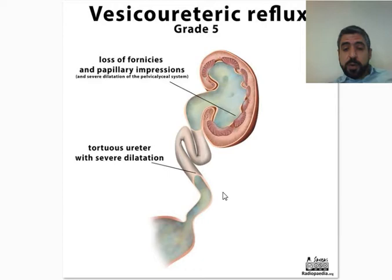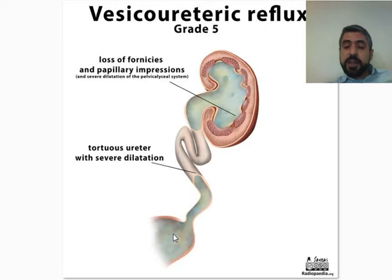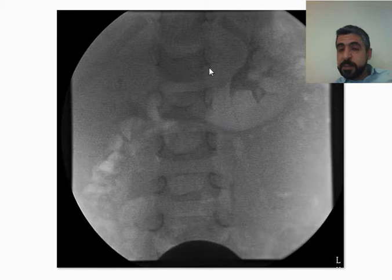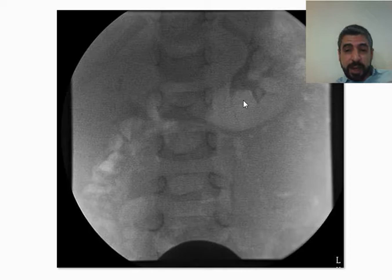You fill the urinary bladder with contrast to ensure it is full and intravesical pressure is high, then remove the Foley catheter and ask the patient to void on the table during exposure. For example, in this case you can see evidence of reflux of contrast material into the pelvicalyceal system all the way into the kidney; however, the kidney is not hydronephrotic, the fornices are preserved, and the papillary impressions are preserved, indicating Grade 3 reflux.